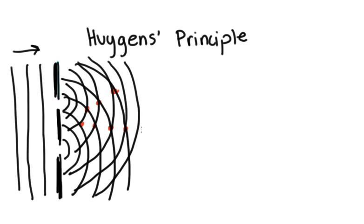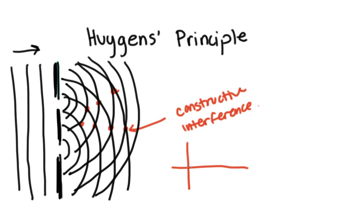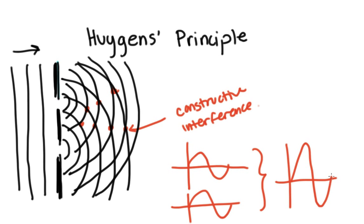What happens at this point, or these points, is constructive interference. So what this means is, the crests come together. So we have one wave, and then we also have another wave, and we know that this results in a wave with double the amplitude. That's exactly what's going on, constructive interference.